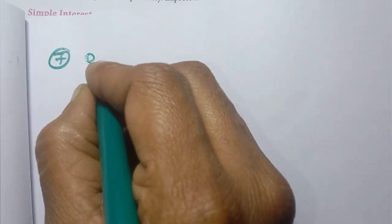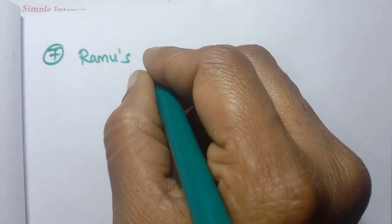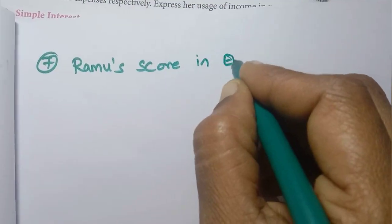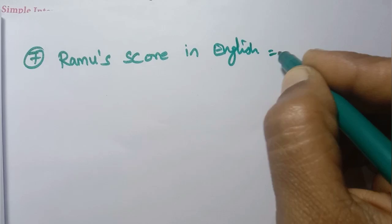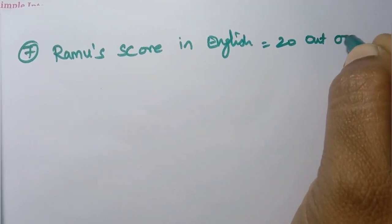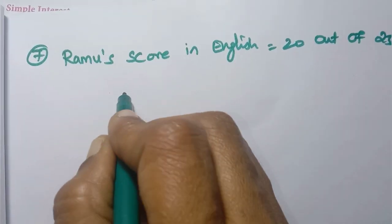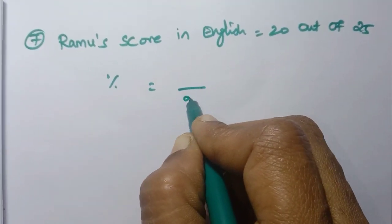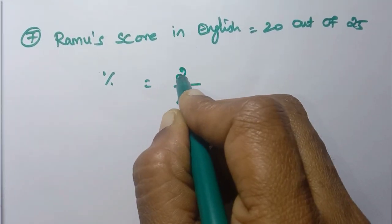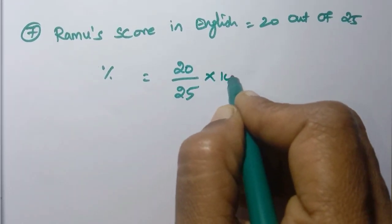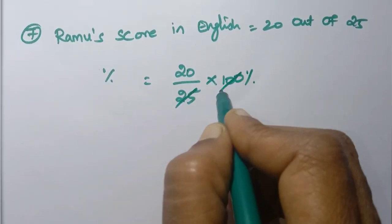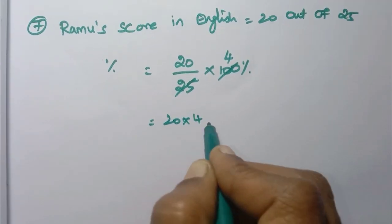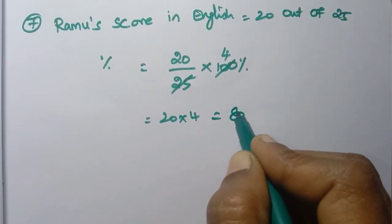Ramo's score in English is 20 out of 25. Percentage equals 20 into 100 divided by 25. Since 25 is 4 times into 100, 20 into 4 equals 80%. So percentage scored in English is 80%.